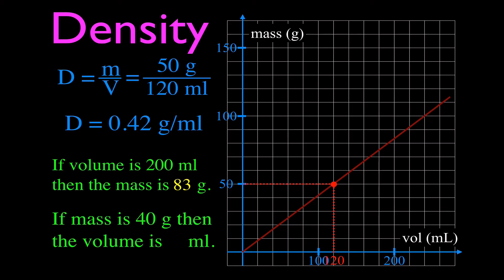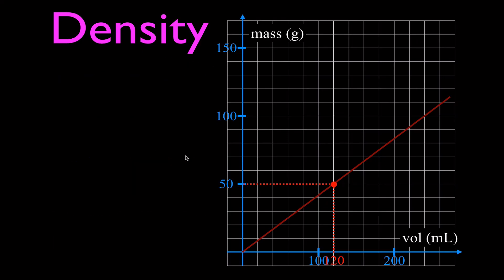If I give you the mass — say mass is 40 grams — what volume would have 40 grams? We start at 40 on the y-axis, read over, and come down to the x-axis. It looks like more than 95 but less than 100, so I chose 97 milliliters. So we can first calculate the density, then interpolate on our graph to find the corresponding volume or mass. If we're given one, we can find the other by reading it right off the graph.